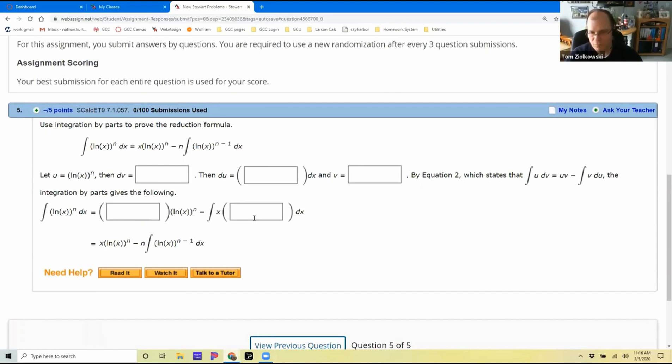This is the integral of the natural log of x to the n, and they're using the reduction formula. It's x ln of x to the n minus n times the integral. Of course they did integration by parts, but this is the exact work again that I showed during class while lecturing. Now I can have the student showing it on their homework.